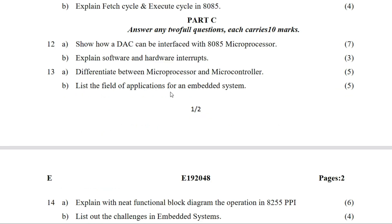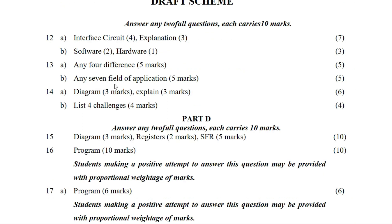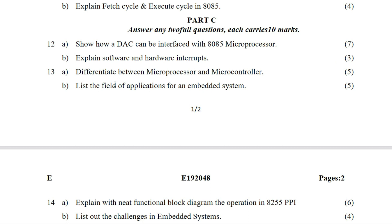Then: list the fields of applications for embedded systems. We need to list any 7 fields of application. Examples include healthcare or public health and other application domains. Each point carries marks, so we need to list 5 to 7 fields.